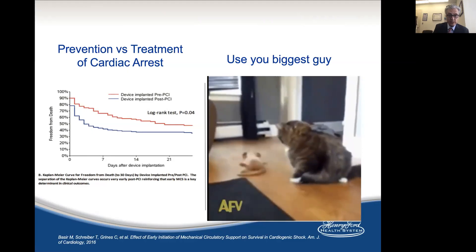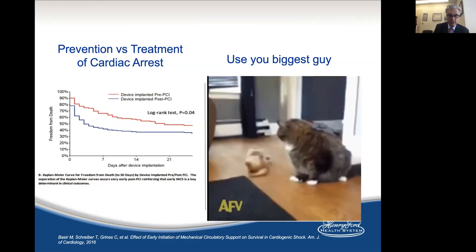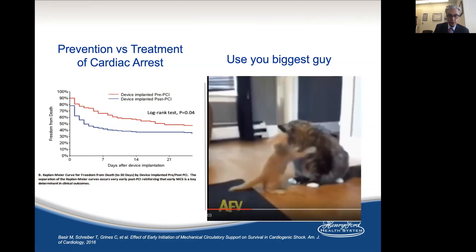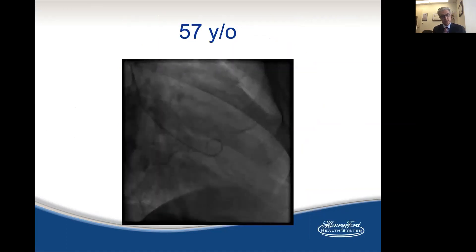If you notice here, device implanted before PCI or after cardiac arrest — there is a survival advantage for patients who have prophylactic implantation of a device. So, prevention: how to prevent a cardiac arrest? You need to choose the patient carefully, check their hemodynamics, and factor in your procedure. Those who are actually at high risk may need to go upfront with mechanical circulatory support.